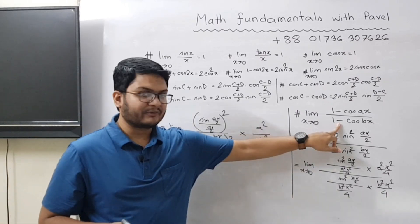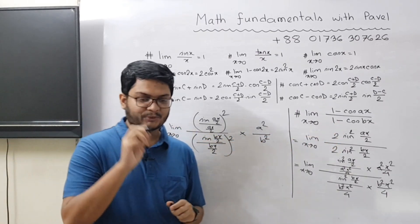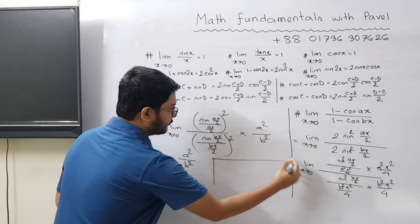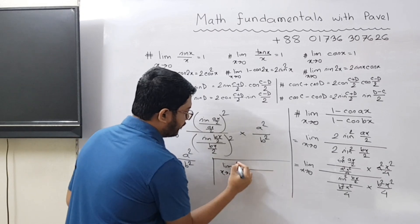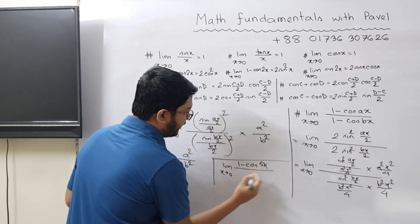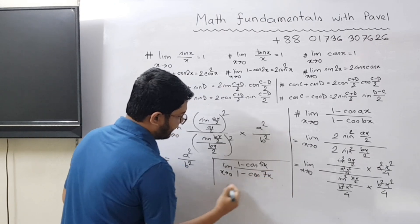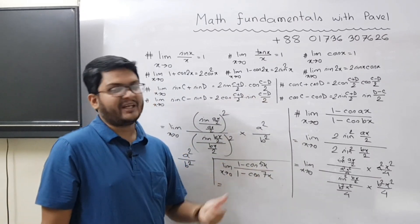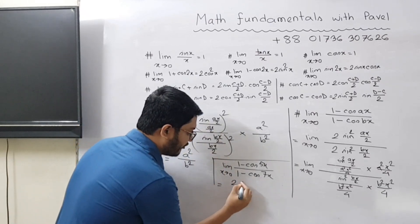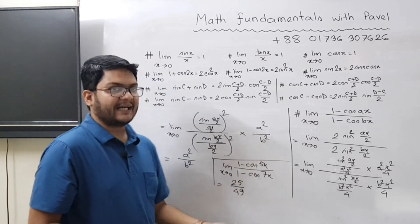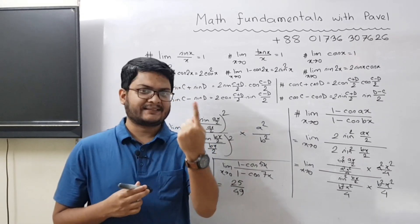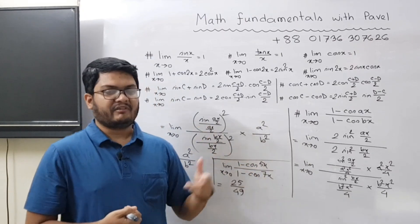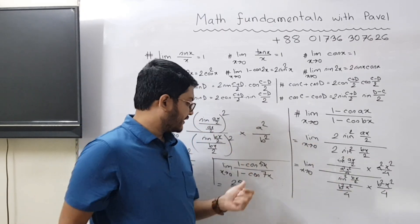So the answer to the formula is a² / b². For example, the limit as x approaches 0 of (1 - cos 5x) / (1 - cos 7x) — here A is 5 and B is 7, so the answer is 5² / 7², which is 25 divided by 49. You can solve such problems in seconds once you know this formula.